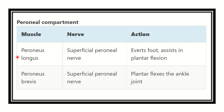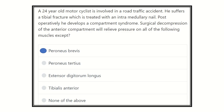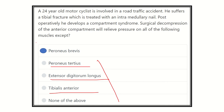The peroneal or lateral compartment has two important muscles: peroneus longus and peroneus brevis, and they are supplied by the superficial peroneal nerve. So peroneus tertius is an anterior compartment muscle, as are extensor digitorum longus and tibialis anterior. But peroneus brevis is a muscle of the lateral or peroneal compartment. Therefore, our final answer is peroneus brevis, as it is not a muscle of the anterior compartment.